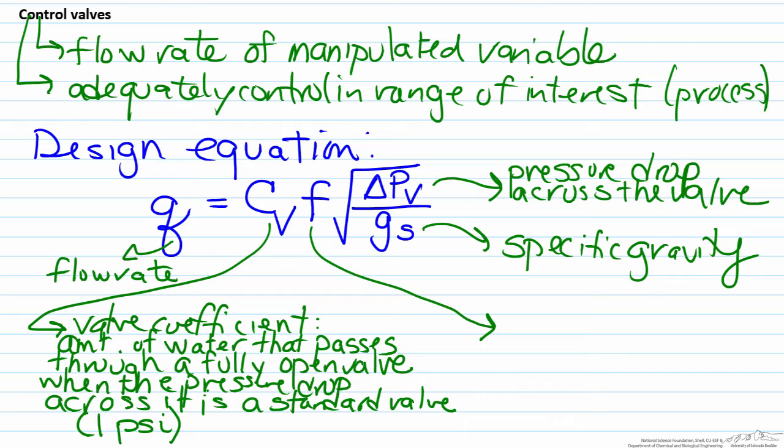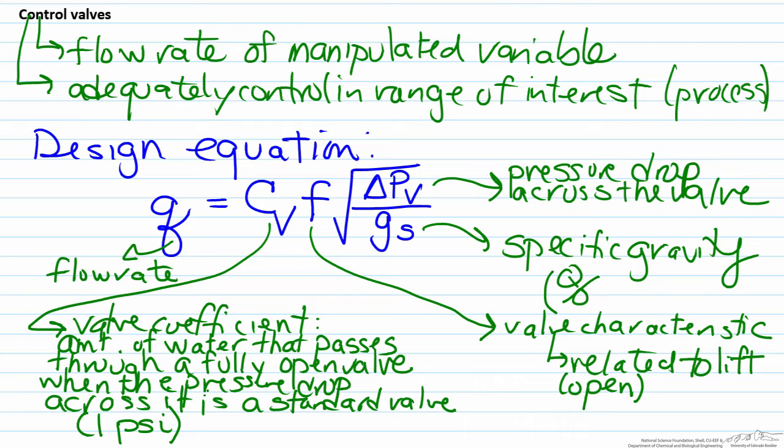The final value F is known as the valve characteristic, and the valve characteristic is related to the lift of the valve. In other words, how open it is. In a simple way the valve characteristic can be represented as the ratio of the actual flow rate going through divided by the maximum flow rate.